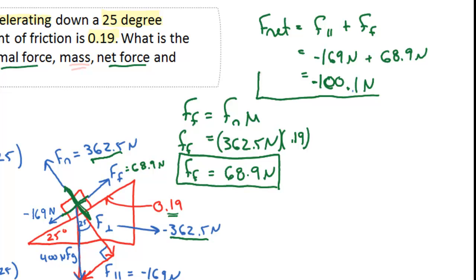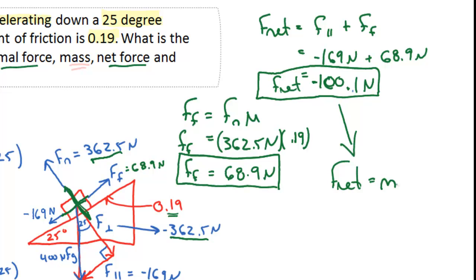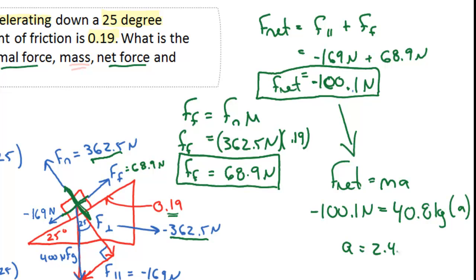Now that we have a net force, we know there's going to be acceleration. Using Newton's second law, net force equals mass times acceleration. Plugging in negative 100.1 Newtons as the net force and 40.8 kilograms as the mass, we solve for acceleration: 100.1 divided by 40.8 gives us an acceleration of negative 2.45 meters per second squared — negative because it is leftward and downward.